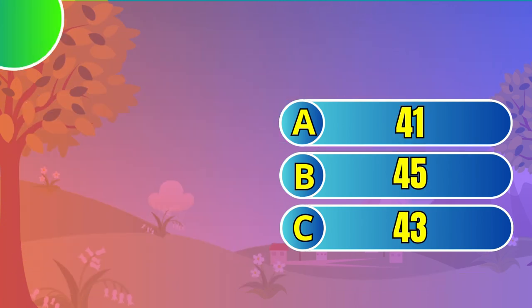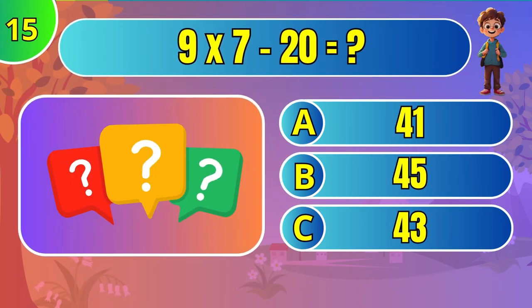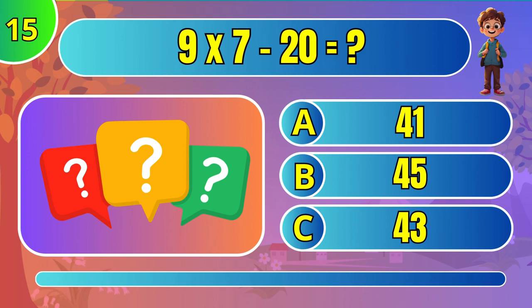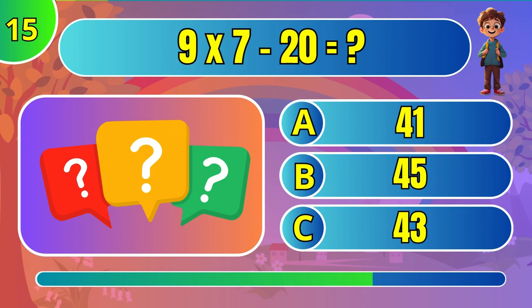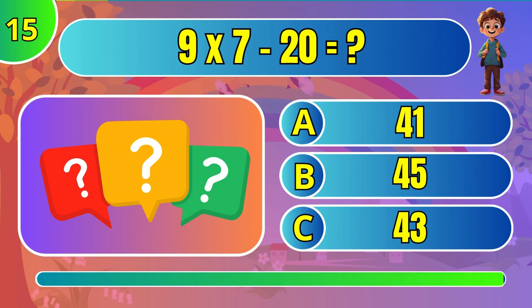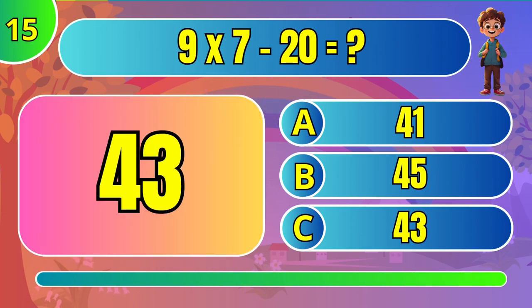What is 9 times 7 minus 20? C: 43. What is 90 divided by 10 plus 5? B: 33.